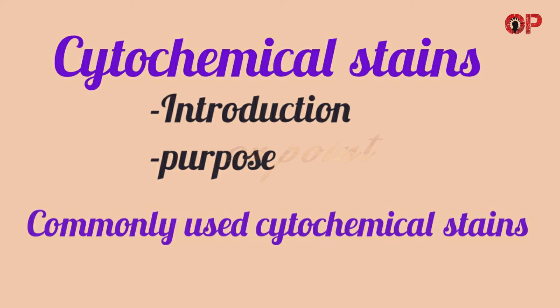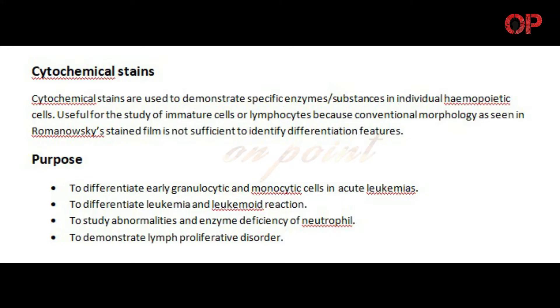Hi everyone. Welcome to On Point. In this video we are going to discuss about cytochemical stains. Cytochemical stains are used to demonstrate specific enzymes or substances in individual hemopoietic cells. It is useful for the study of immature cells or lymphocytes because conventional morphology as seen in Romanowski's stained film is not sufficient to identify differentiation features.